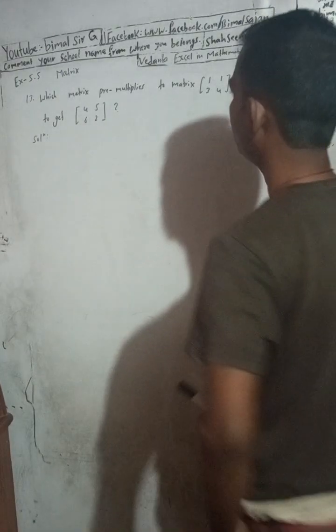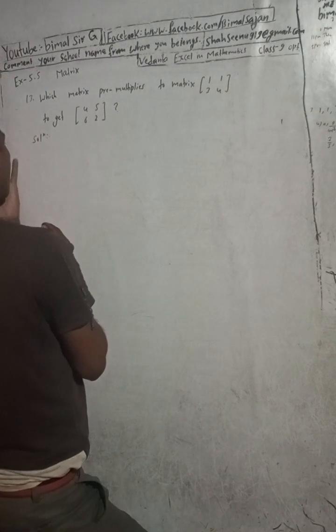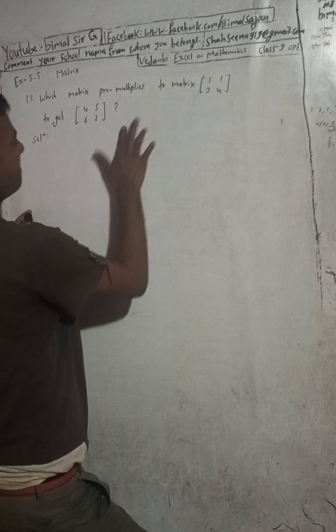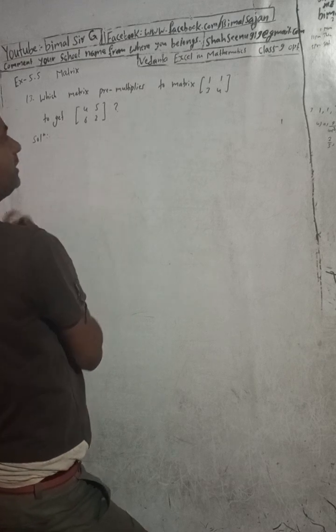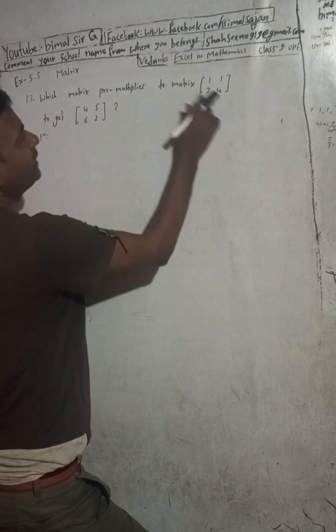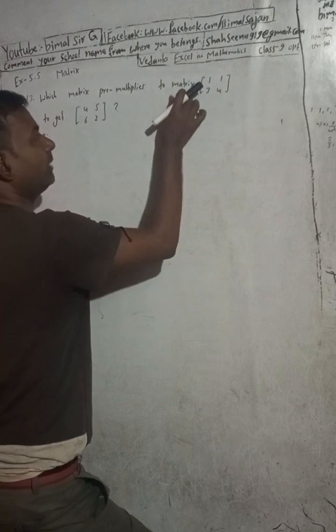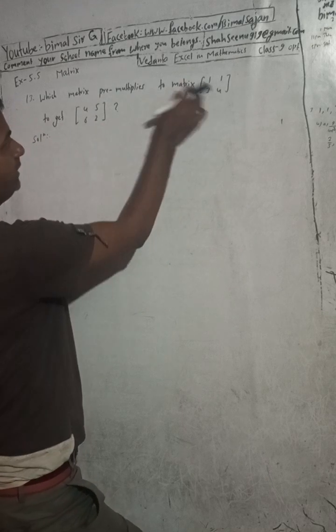Okay, let's begin this solution. Here: which matrix pre-multiplies the matrix [1,1;3,4] to get [4,5;6,2]? Pre-multiplies — yo matrix maa pre-multiplies baaneko, aare hai ya, ishko aare kye multiply garaun chai ki hanko le — reality aonch, ishko aare hai pre-multiplies.